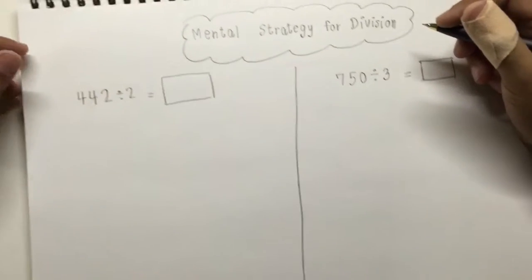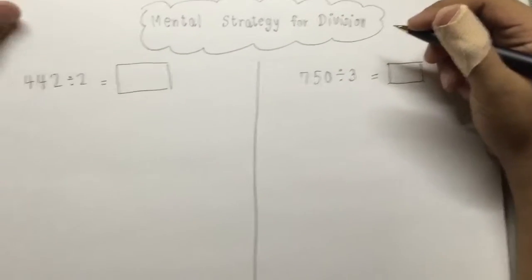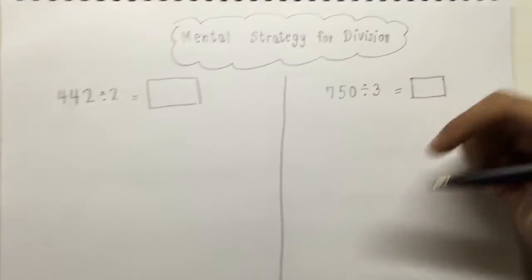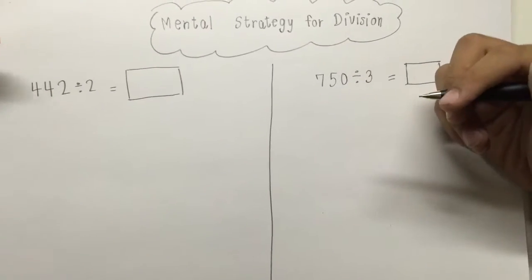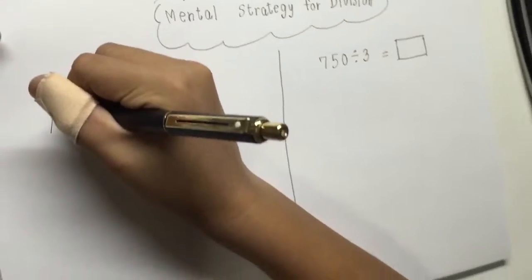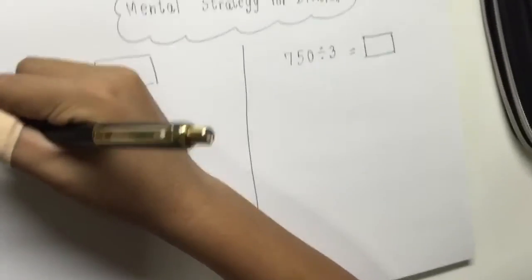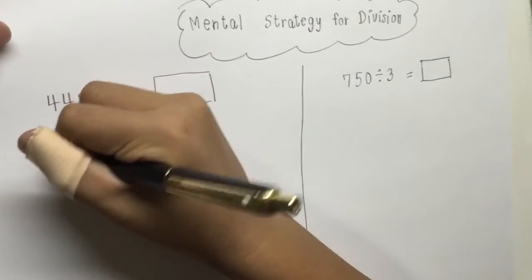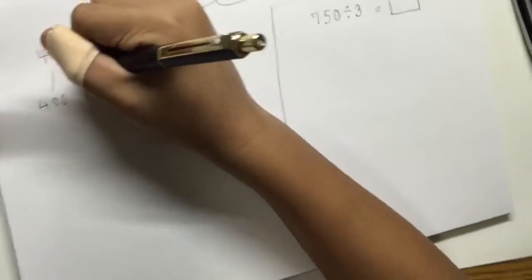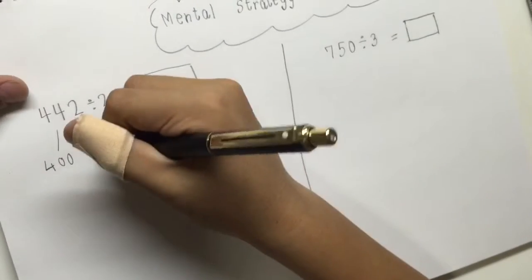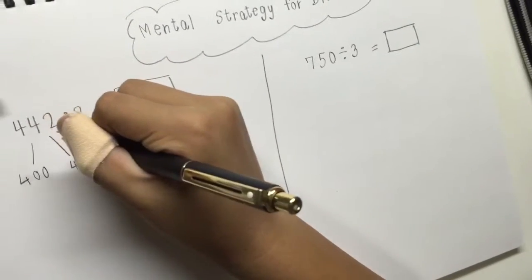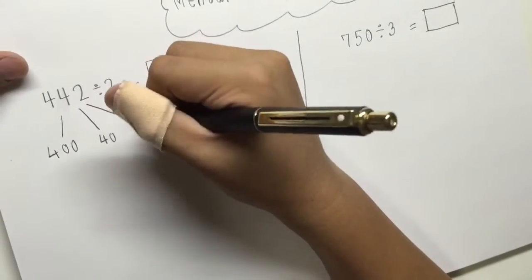Mental strategy for division. The first question is 442 divided by 2. So the first number that I think is 400, the second number that I think is 40, and the last number that I think is 2.